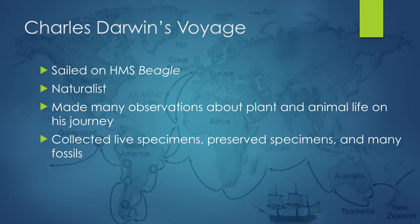Darwin set sail on Her Majesty's ship the Beagle. He was a naturalist and made many observations about plant and animal life on his journey. He started in Europe, went around South America to the Galapagos Islands — his most famous stop — then traveled to New Zealand, Australia, briefly to Africa, and back to England. He collected many live specimens, preserved specimens, and fossils.